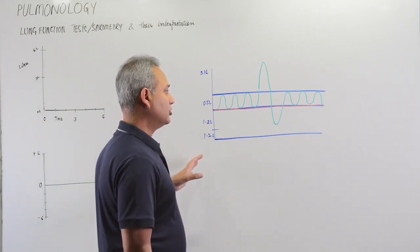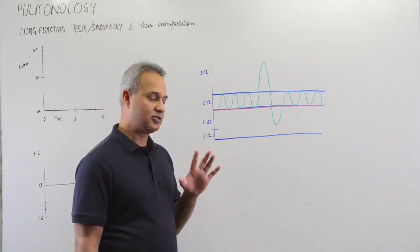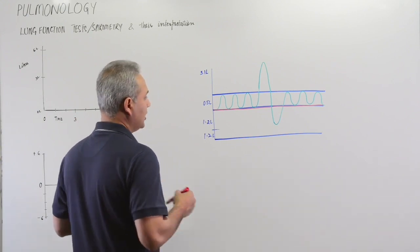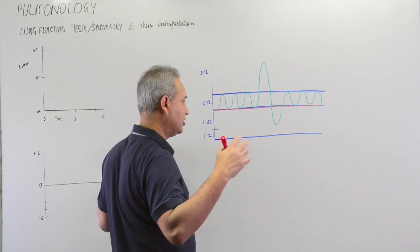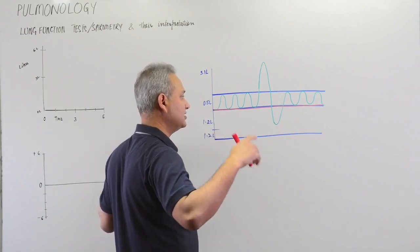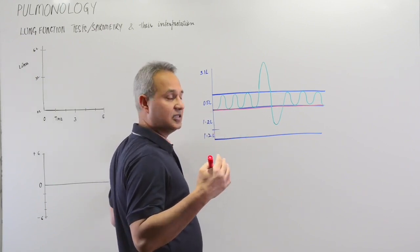So what we have over here is the normal volume changes and capacities in the lungs.